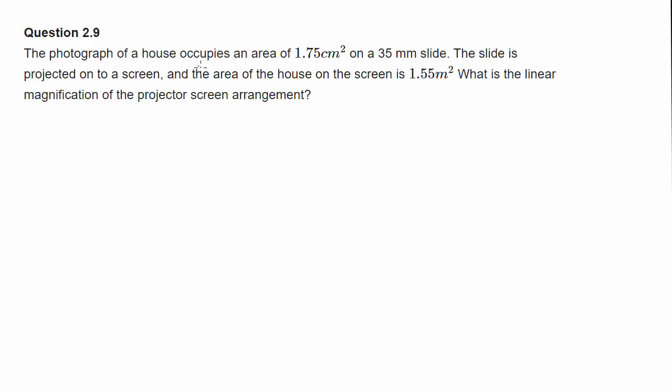The photograph of a house occupies an area of 1.75 cm² on a 35 mm slide. The slide is projected onto a screen and the area of the house on the screen is 1.55 m². What is the linear magnification of the projector screen arrangement?